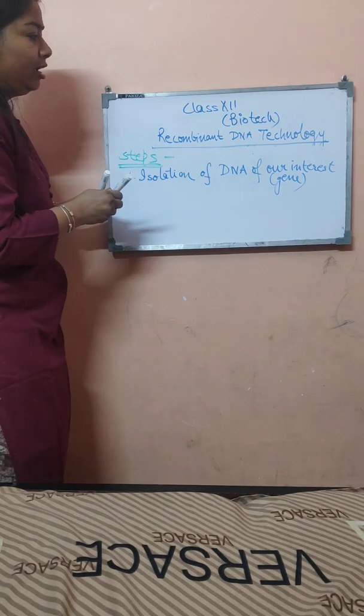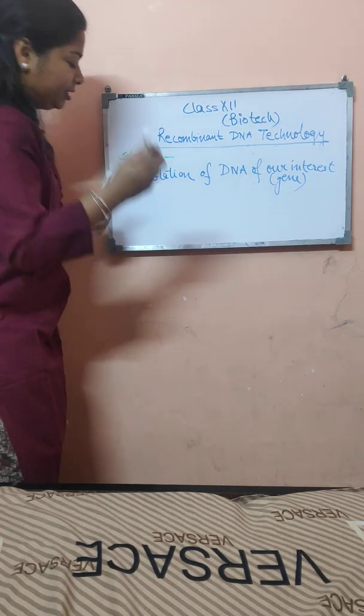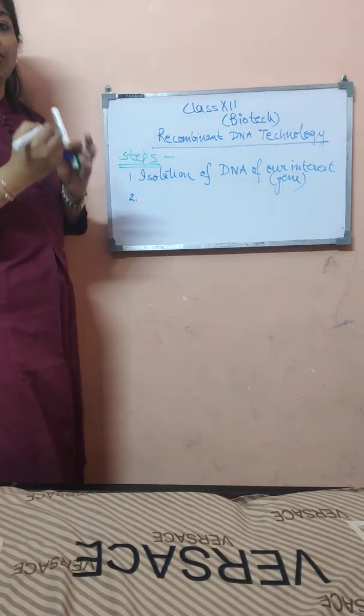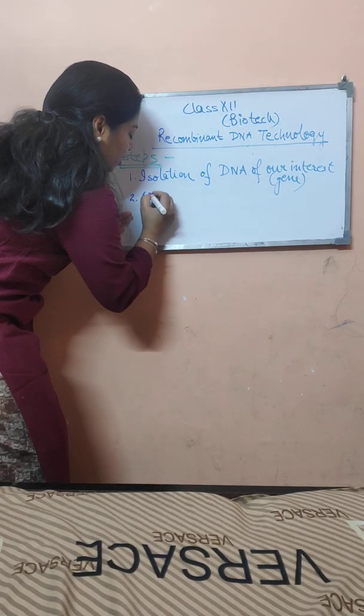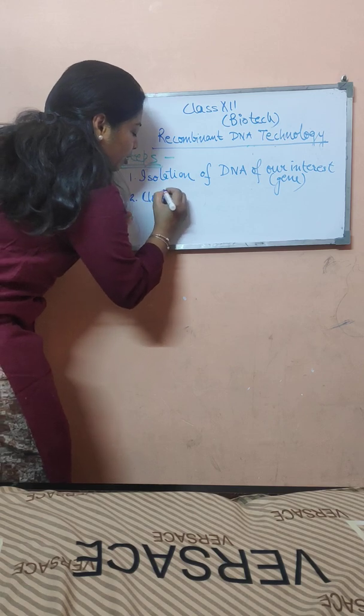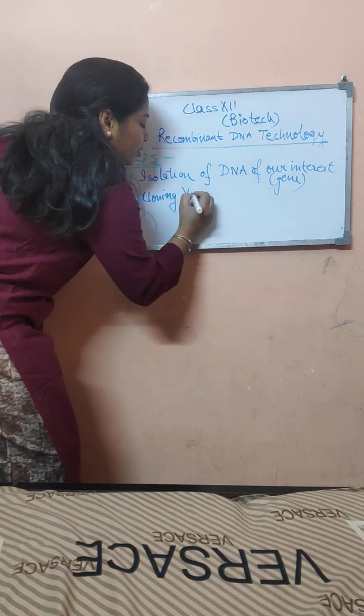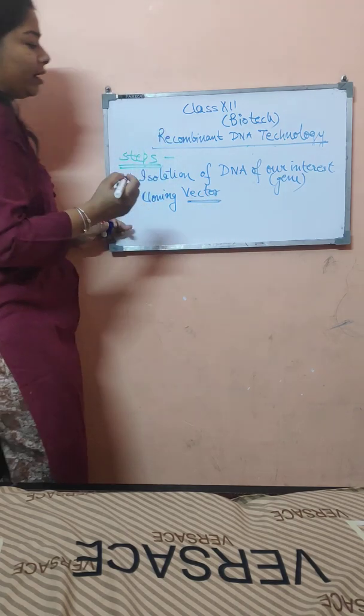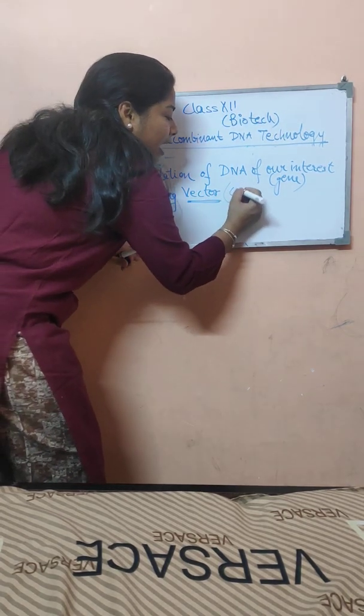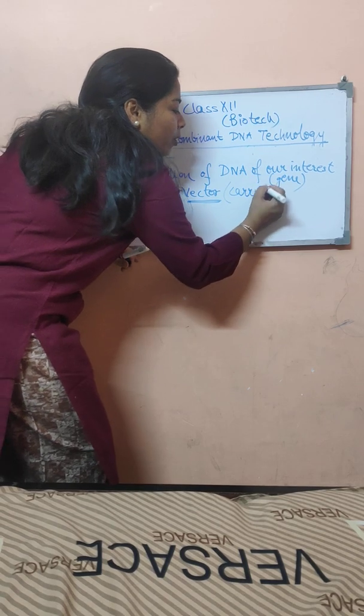After isolating this particular DNA of our interest, the second point is to put it into the cloning vector. And what is this vector? This vector is a carrying vehicle.